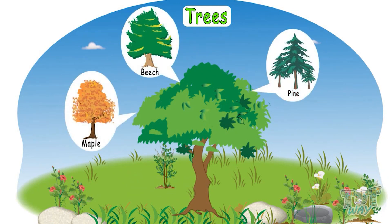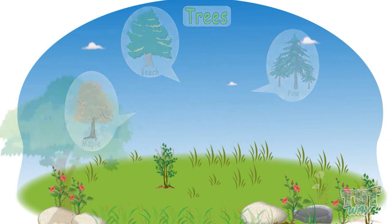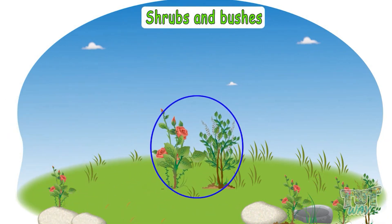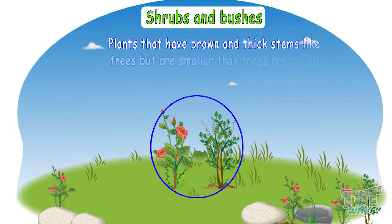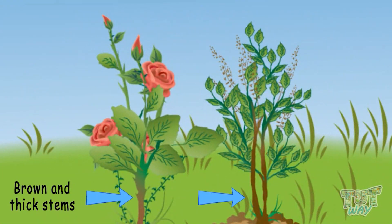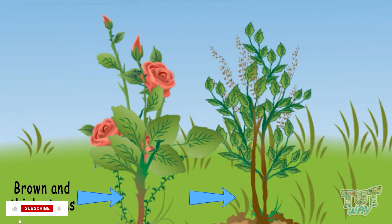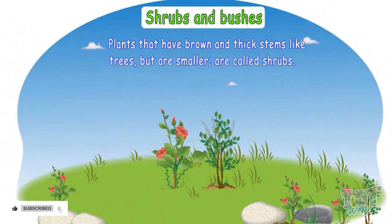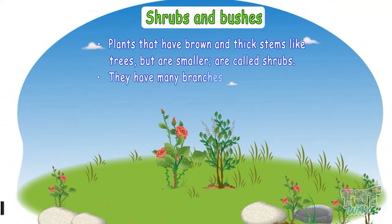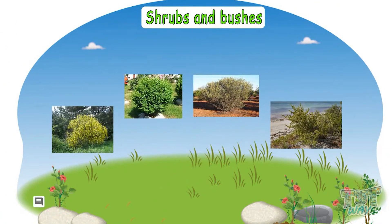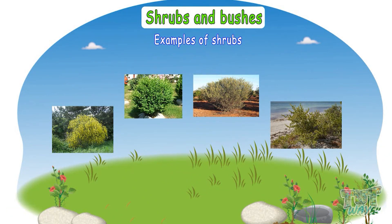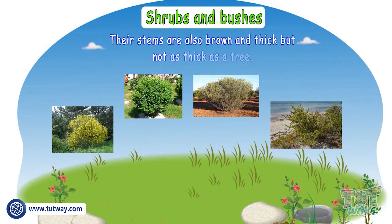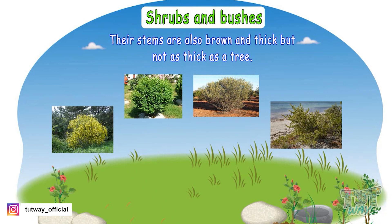Now let's see what are shrubs and bushes. Plants that have brown and thick stems like trees but are smaller than trees are called shrubs. They have many branches. These are some examples of shrubs — look, their stems are also brown and thick but not as thick as a tree.